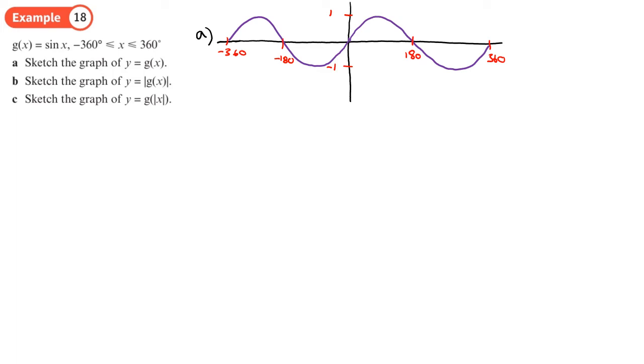Part b: now the modulus is around the whole thing, which means we take any parts of the graph which are below the axis and we flip them up. So you're going to get this. Not the greatest sketch in the world, but it's the right shape, the place things in the right places that will get me the mark.